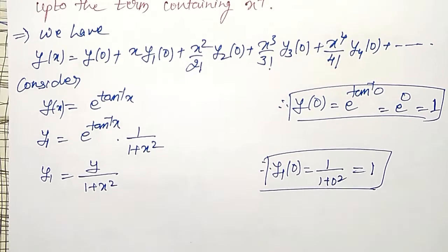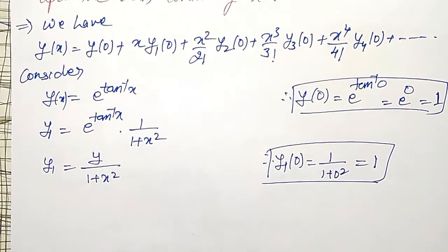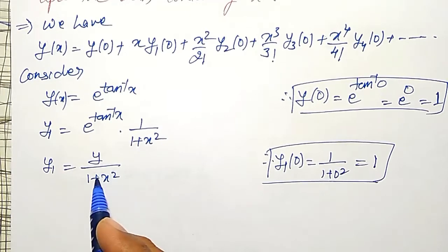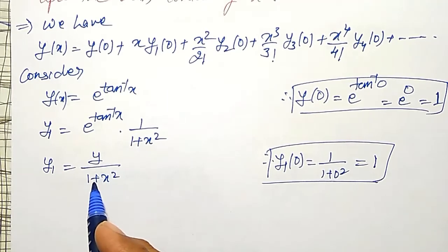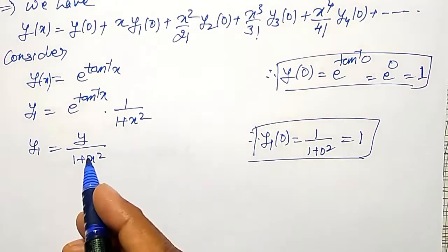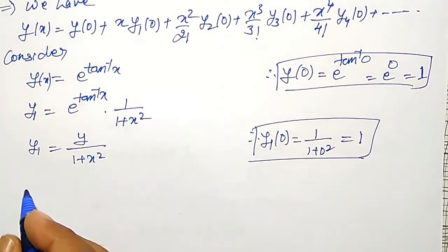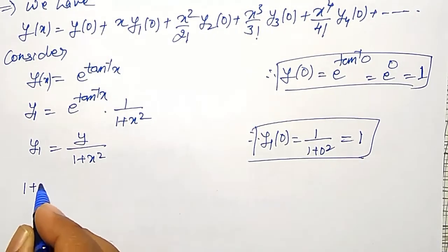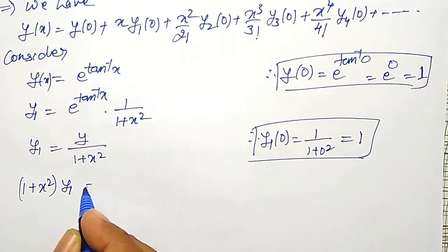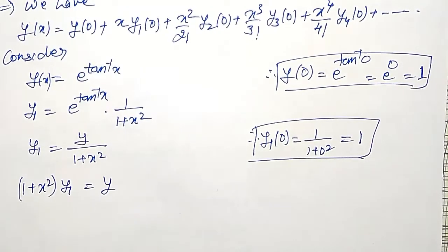To find y2, I need to differentiate y1 = y/(1+x²). To avoid the quotient rule, I rearrange to use the product rule: (1 + x²)·y1 = y.